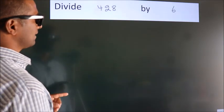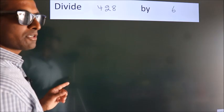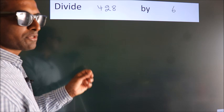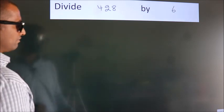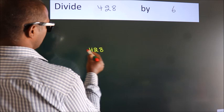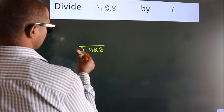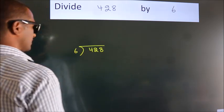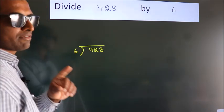Divide 428 by 6. To do this division, we should frame it in this way: 428 here, 6 here. This is your step 1.